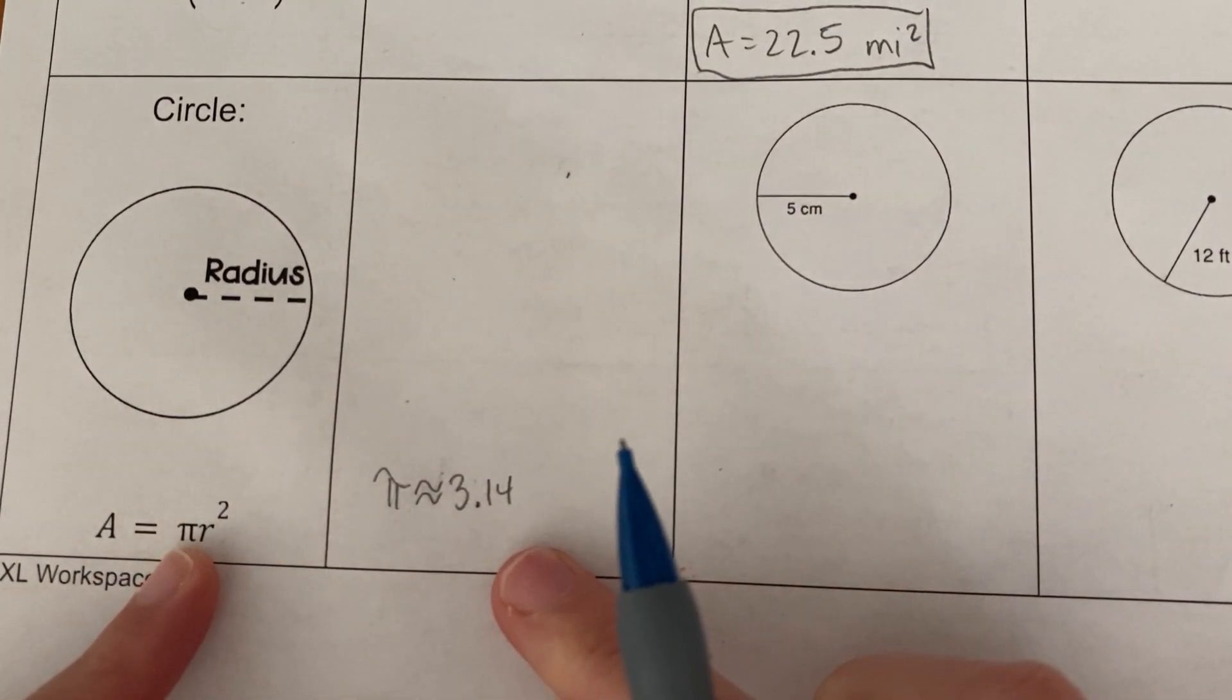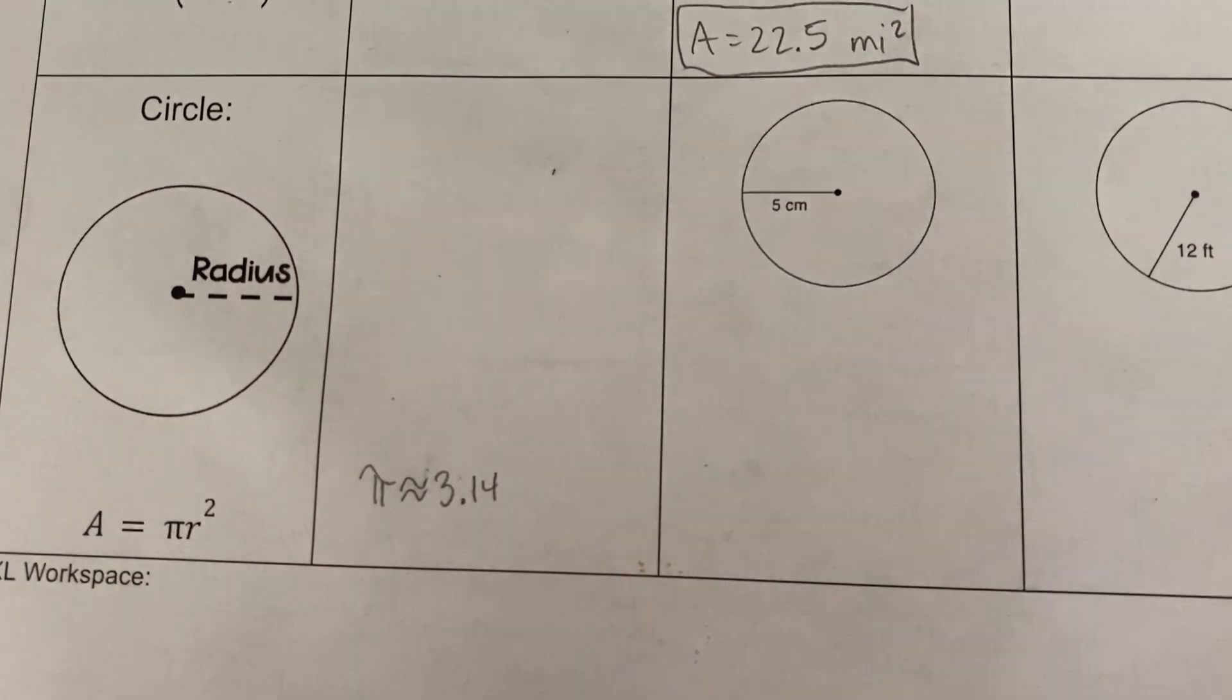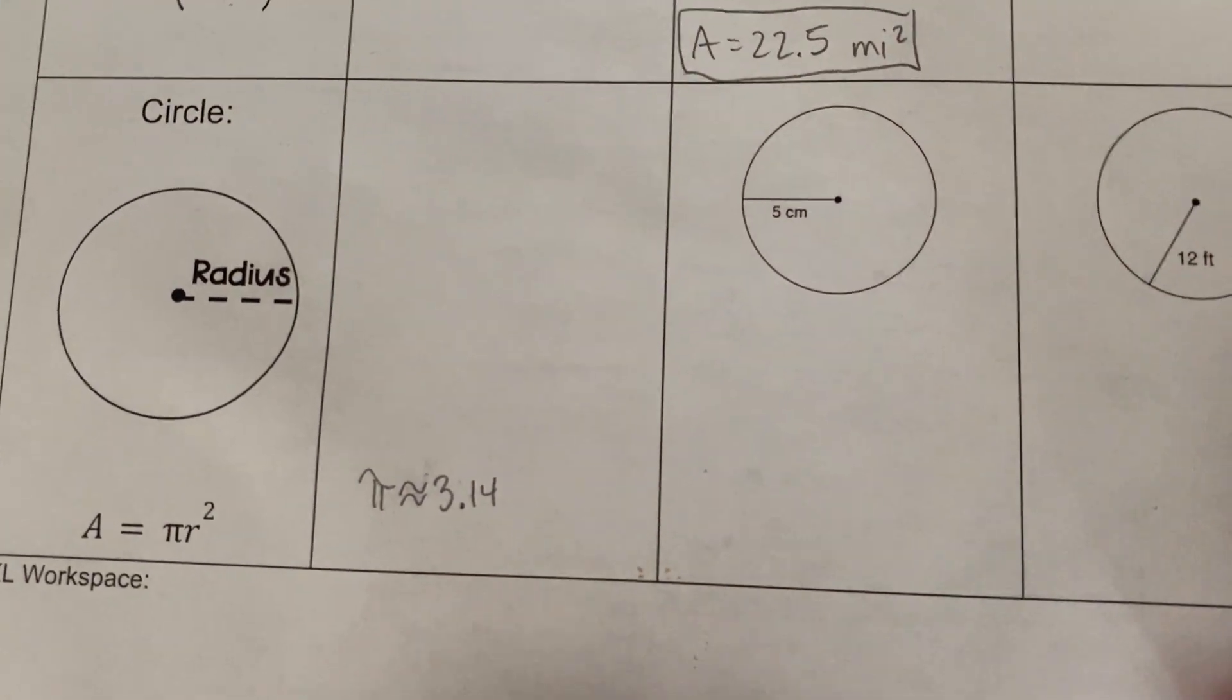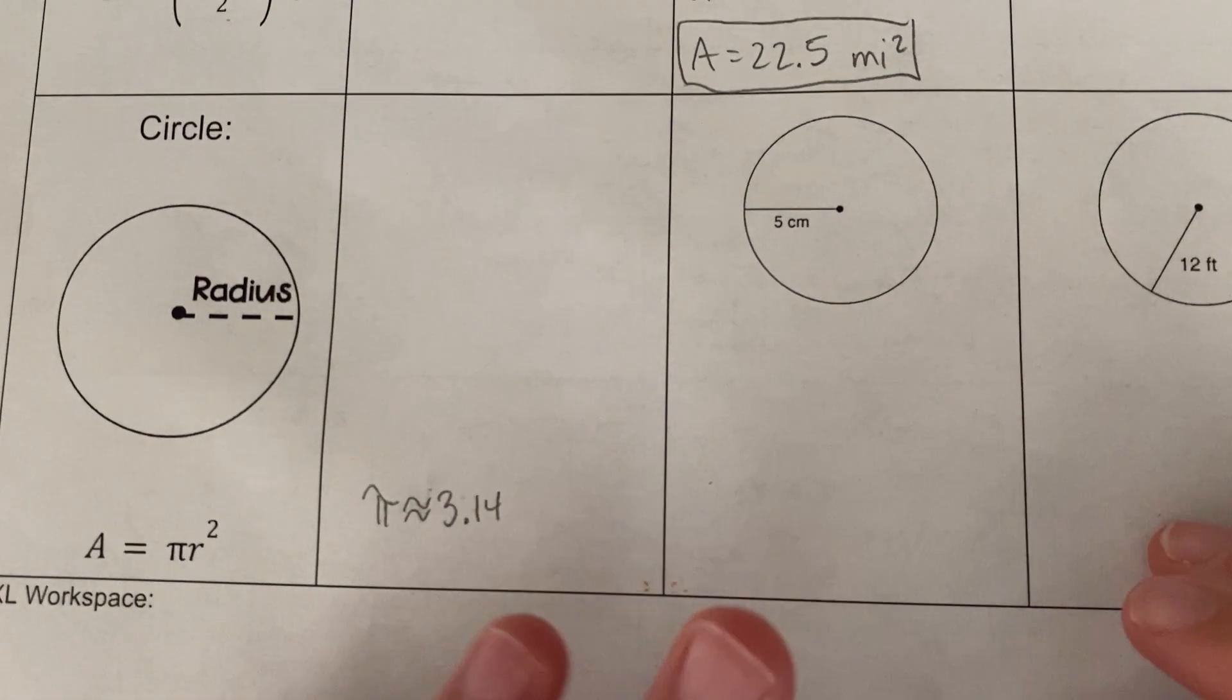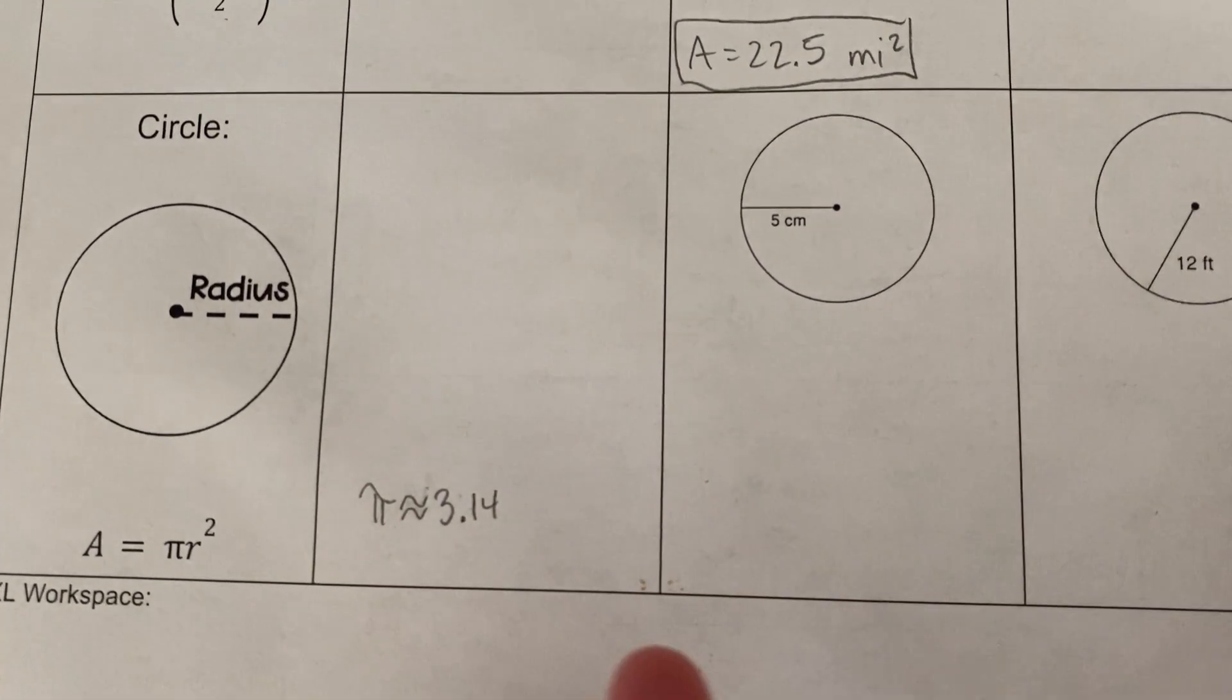It doesn't equal exactly 3.14, right? It actually equals a much longer decimal that never ends. Now, let's talk about the formula, and then we're also going to talk about how we use pi in our calculations.